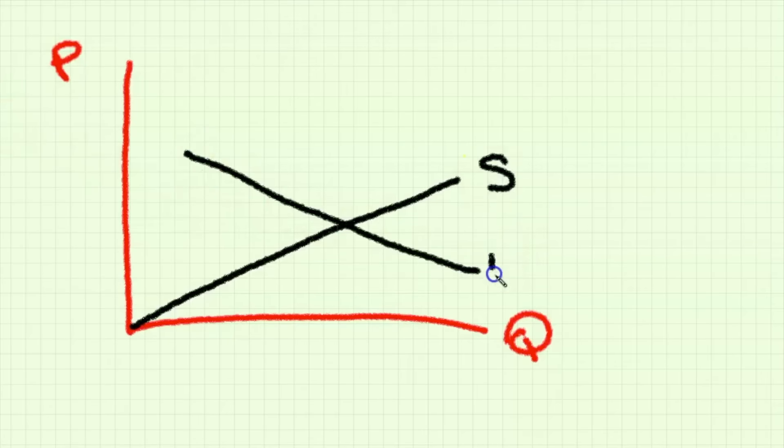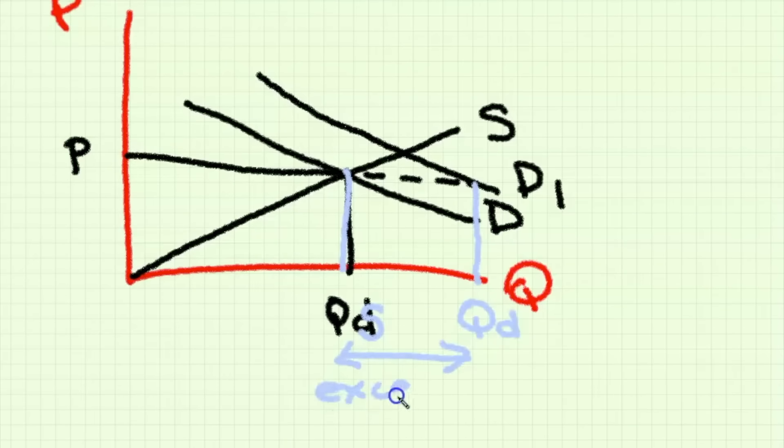First we have a normal supply and demand diagram where the intersection is the microeconomic equilibrium where the market clears, basically quantity demanded equals quantity supplied. But let's say we had an increase in the demand curve to the right. If this is the case then we have probably excess demand at the same price that the equilibrium was previously at.